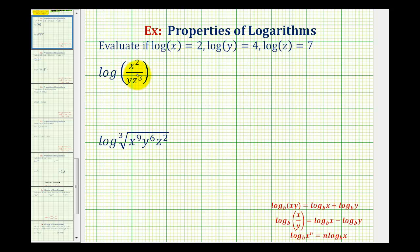For our first example, since we have a quotient here, we can write this as a difference of two logs using this quotient property. We'll have the log of the numerator minus the log of the denominator.